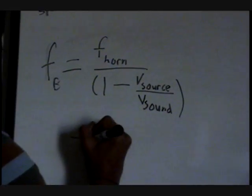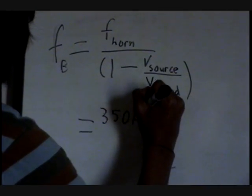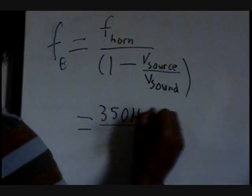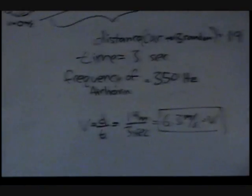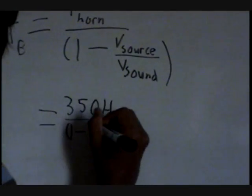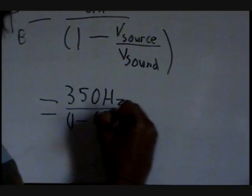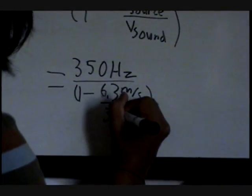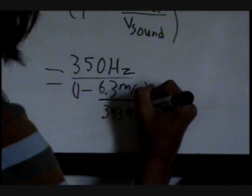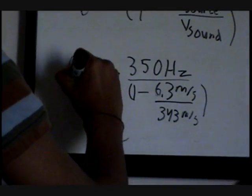The frequency of the air horn is 350 hertz. And we take that over 1 minus, and the velocity of Philip, we calculated to be 6.3 meters per second. So it's 6.3 meters per second all over the velocity of the sound, which is given, and it is calculated to be 343 meters per second. And this equals the frequency that I will hear.